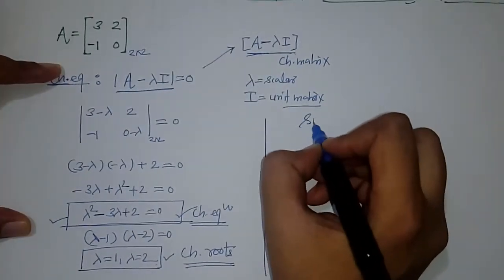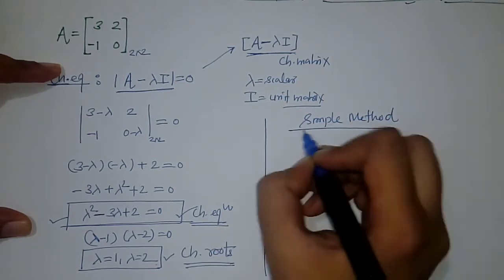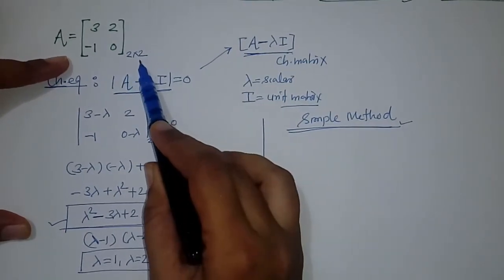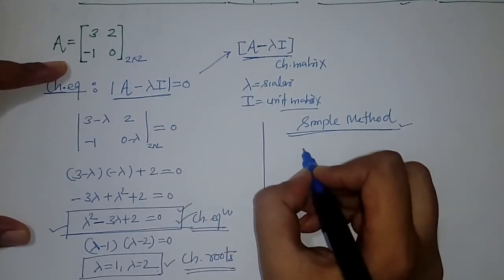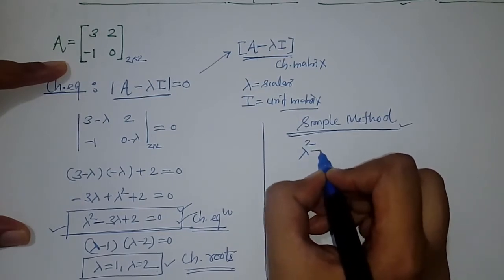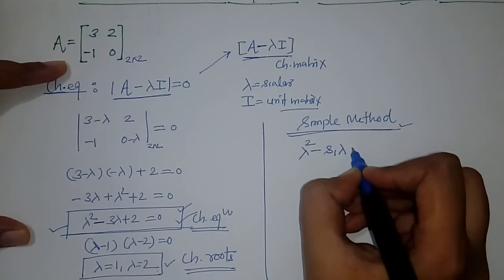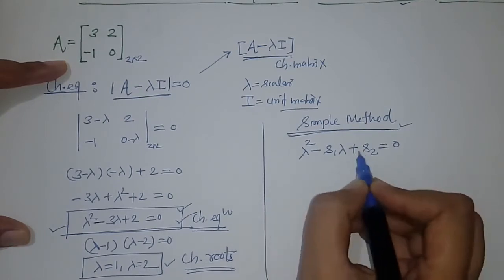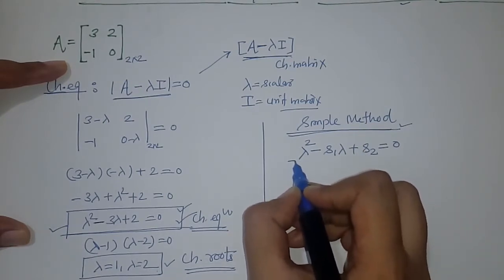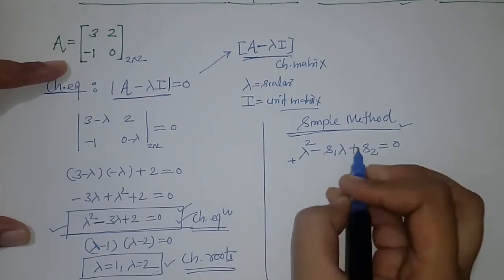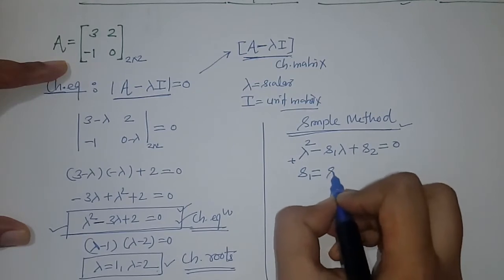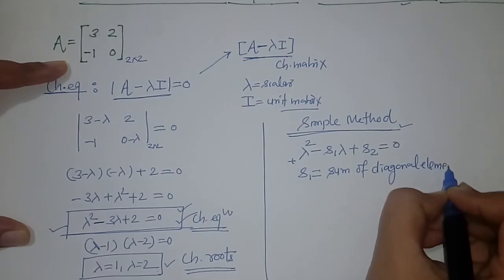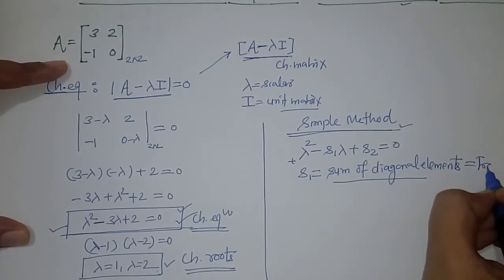We can find this by a simple method. We write the characteristic equation in general form. Since we have a matrix of order 2 by 2, we write the characteristic equation as lambda squared minus S1 lambda plus S2 equals 0, taking alternate plus-minus signs. S1 is the sum of diagonal elements, also called the trace.